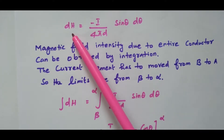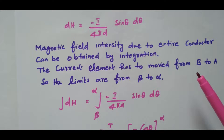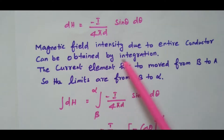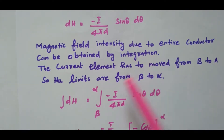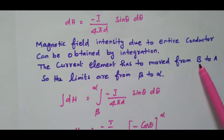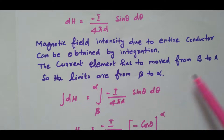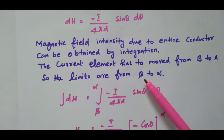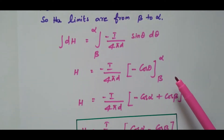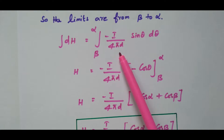This is the magnetic field intensity due to only one small current element. By integrating on both sides, we will get the total magnetic field intensity due to the entire conductor. The current element has to move from B to A. For point B, the corresponding angle is beta, and for point A, the angle is alpha. So the limits are from beta to alpha. Integrating: H equals the integral from beta to alpha of minus i divided by 4 pi d times sin theta d theta.